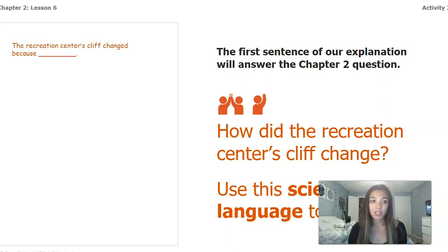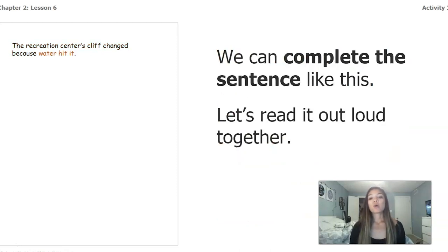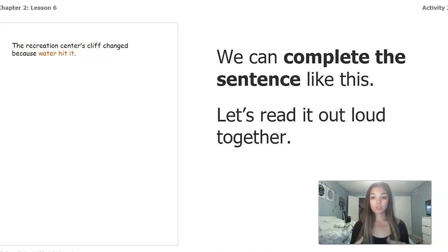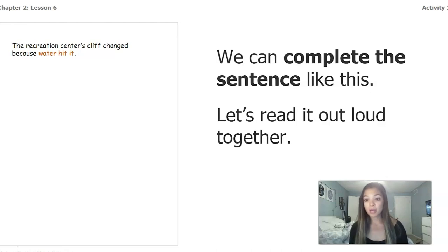We're going to use scientific language and vocabulary, starting with the sentence stem: 'The recreation center's cliff changed because blank.' Here's an example: 'The recreation center's cliff changed because water hit it.' We're using information from our story — we know the cliff is near water, we know water can change landforms because we've read about it and investigated it with the flower.